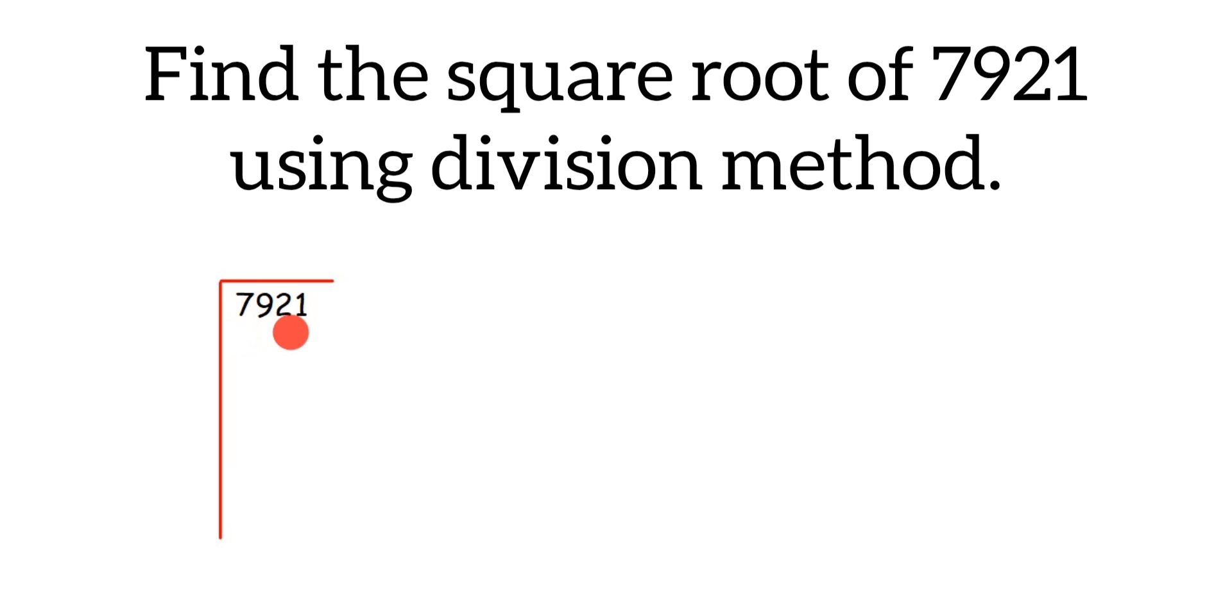We have to find the square root using the division method. The first step is to pair up the numbers. When you start pairing, start from the right side. That is, 21 will form one pair and 79 will form another pair.